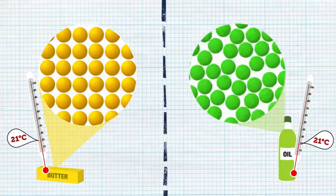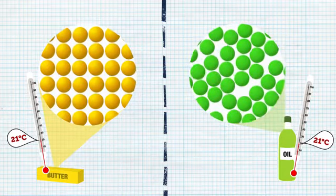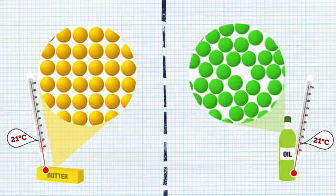The difference is that the molecules in the liquid oil are moving more freely than the molecules in the solid butter.